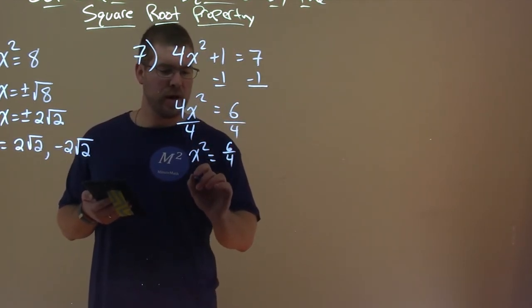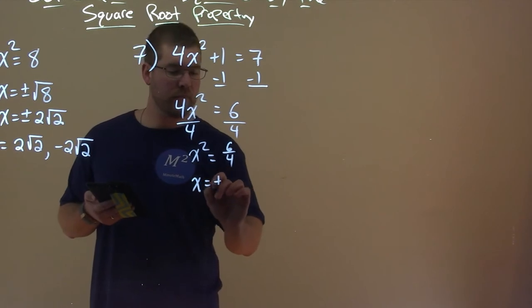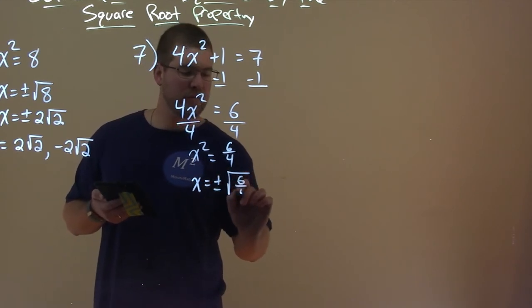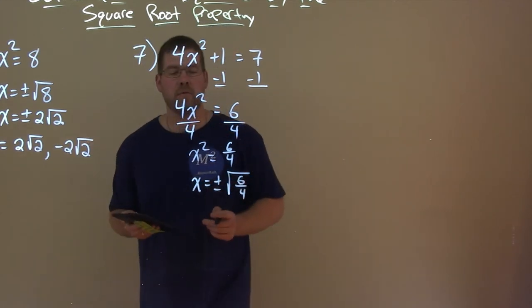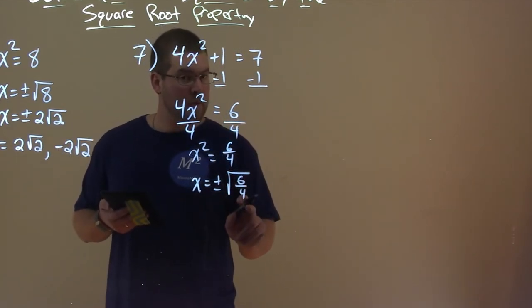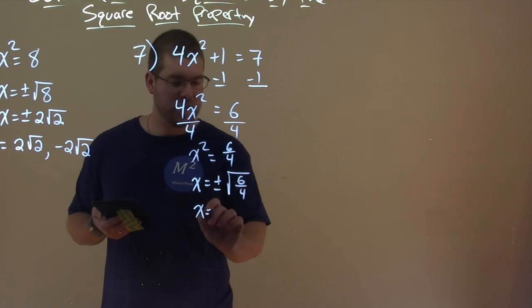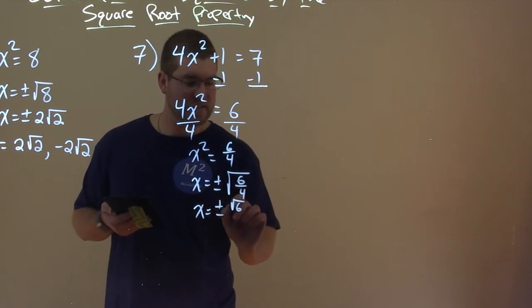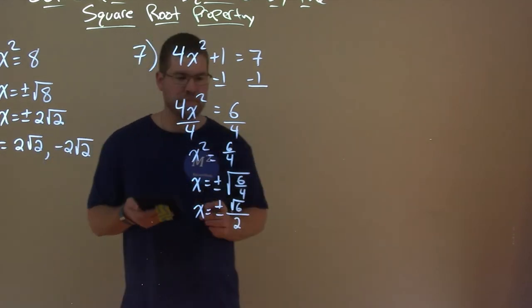when I take a square root of both sides, I'm left with x equals plus or minus the square root of 6 fourths. And that's where we're applying the square root property. From there, we can take a square root of the numerator and denominator individually. So x equals plus or minus square root of 6 for the numerator. Denominator, square root of 4 is just 2.